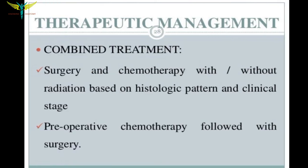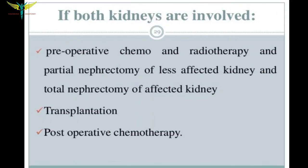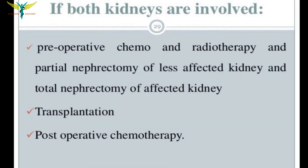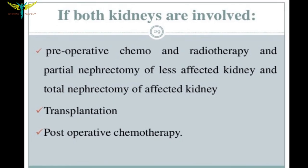Management of nephroblastoma involves surgery with chemotherapy, with or without radiation, based on the histological pattern and clinical stage. Pre-operative chemotherapy is followed by surgery. If both kidneys are involved, pre-operative chemo and radiotherapy are given, along with partial nephrectomy of the unaffected kidney and total nephrectomy of the affected kidney. Transplantation can also be done in bilateral involvement, followed by post-operative chemotherapy.